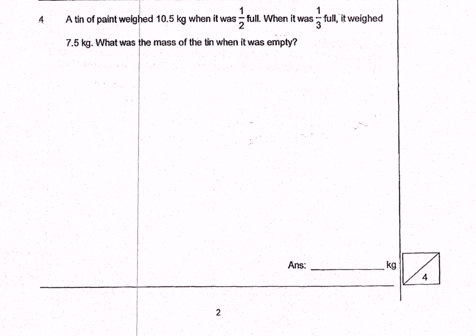A tin of paint weighs 10.5 kg when it was half full and when it was one third full it weighs 7.5 kg. Find the mass of the tin when it was empty.